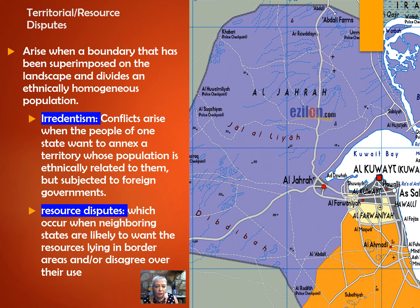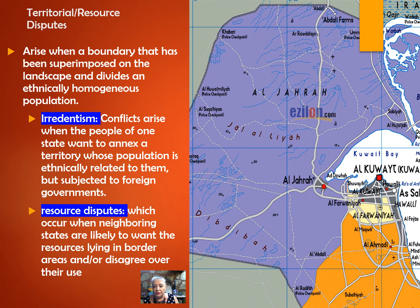Another type is the resource dispute — conflicts over the use of resources usually created or complicated by a boundary line. Reasons for the dispute could include a resource that is on both sides of the border or straddles the border, such as a river basin or oil fields. Another reason why resource disputes occur — sometimes called environmental disputes — is when one party on one side of the border accuses the other of using a shared resource and causing it to become depleted.